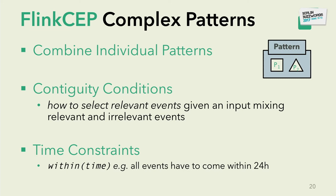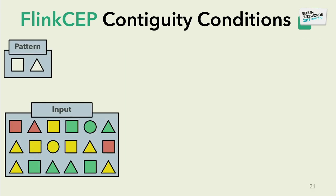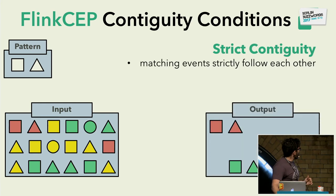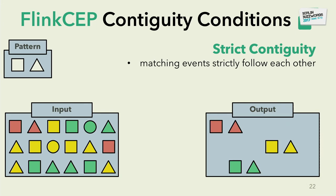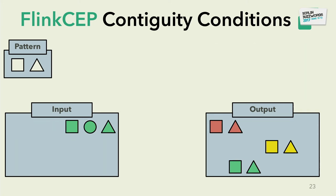Continuity conditions are quite interesting. Taking the previous example, the accepted sequences are cases where the triangle strictly follows the rectangle with no non-matching events in between. This is called strict continuity — matching events strictly follow each other. In some use cases this is not enough: consider the highlighted green pattern where you have a rectangle, a circle, then a triangle of the same color. With strict continuity this is rejected just because the circle breaks the strict continuity between the two otherwise matching events.